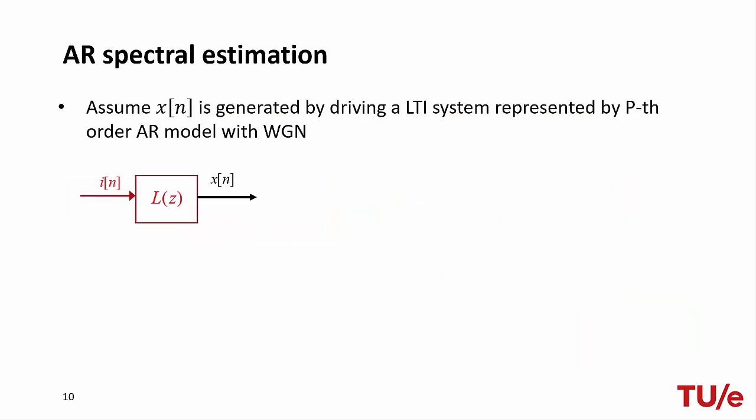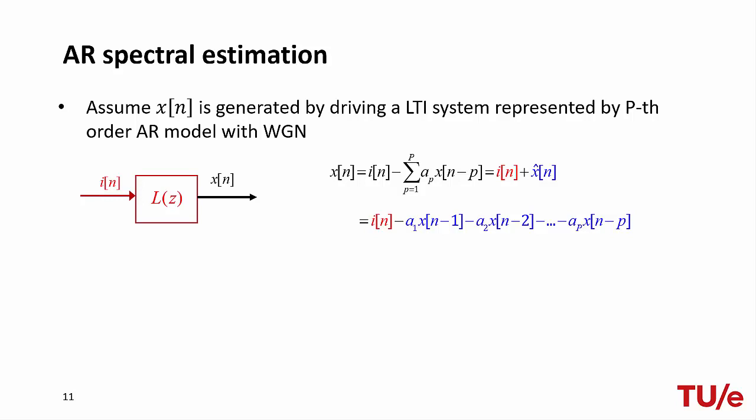As a first instance, we consider modeling the observed data as an autoregressive process of order P. This means driving an LTI system with no zeros and P poles with white noise — typically referred to as an innovation filter. The difference equation for such a model describes the observed data as composed of two components: an unpredictable part (the innovation, shown in red) and a predictable part (shown in blue), obtained by a linear combination of past samples, or equivalently, filtered by L(z).